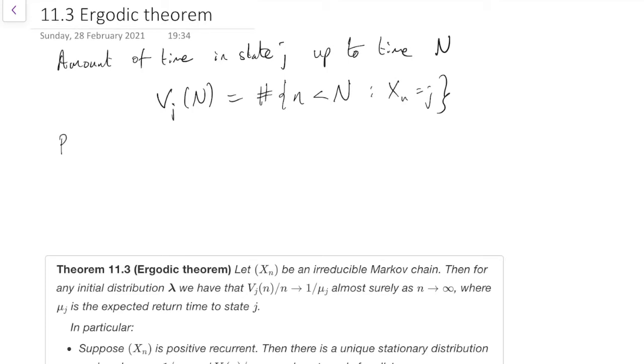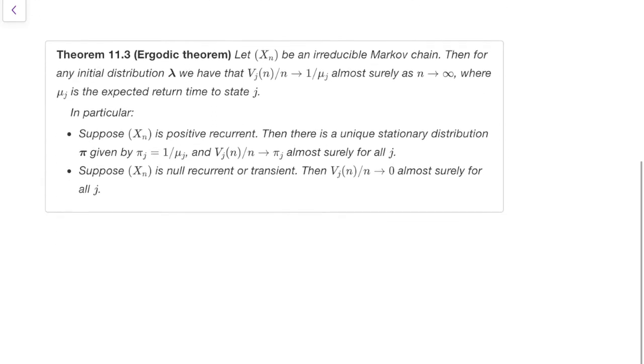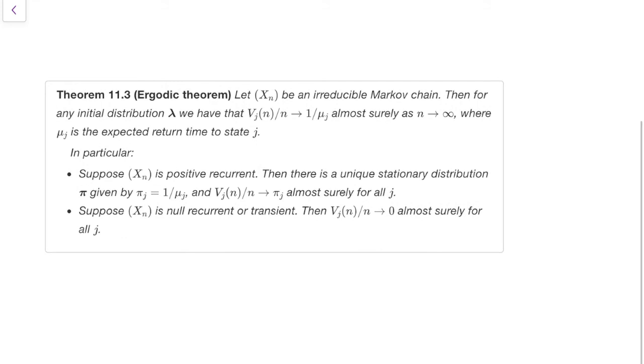And then proportion of time is just going to be that divided by n, as in what percentage of the time were we in that state. The proportion of time is V_j(N) over N. And we're interested in the limit as n tends to infinity because that will give us the long-run proportion of time. So I'm interested in what's the limit of V_j(N) over N, the long-run proportion of time. And for that we have the ergodic theorem, the third important theorem of this part of the course.